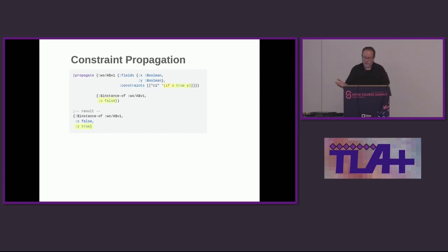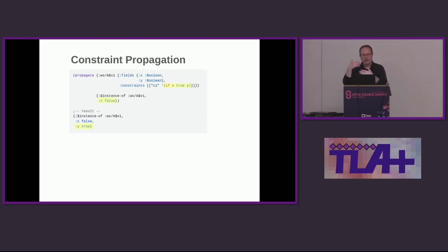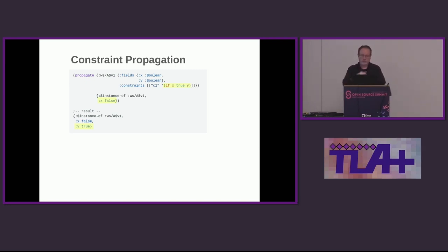One of the promises of Halite — which isn't fully realized yet but is the idea — is that if users express their models using Halite, which is more what you'd expect as a developer rather than bringing in a lot of mathematical things, then folks behind the curtain can do things to map Halite specs into various formal tools. Early on with SALT we had it mapped to TLA+, so you could transpile your specs over to TLA+. We don't actually have that with Halite currently — we got distracted with other things — but what we do have is constraint propagation.